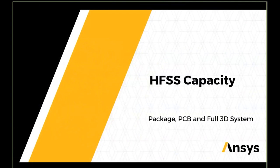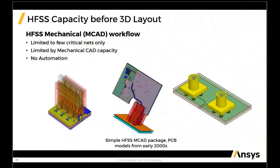In the next section, we will introduce you to the new levels of HFSS capacity and push the boundaries of HFSS complexity via HFSS 3D layout workflow. As a quick reminder of HFSS capacity before 3D layout: it was limited to very few critical nets, limited editor capabilities, no automation, and no parameterization. The models solved a decade or two ago in the HFSS MCAD interface typically show only one or two differential pairs, or very short and simple differential trace routing.